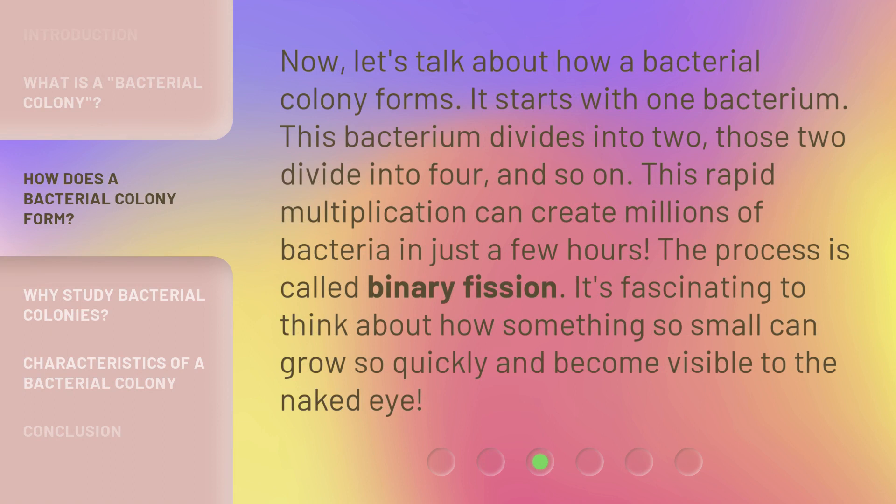Now, let's talk about how a bacterial colony forms. It starts with one bacterium. This bacterium divides into two, those two divide into four, and so on. This rapid multiplication can create millions of bacteria in just a few hours. The process is called binary fission. It's fascinating to think about how something so small can grow so quickly and become visible to the naked eye.